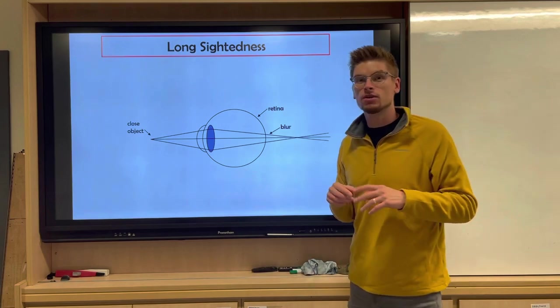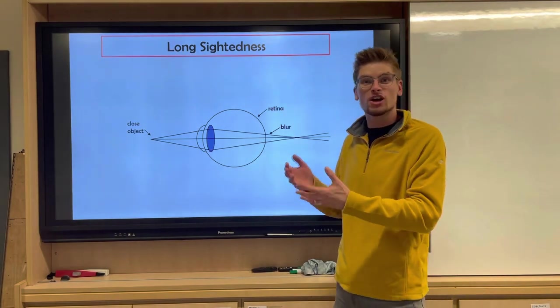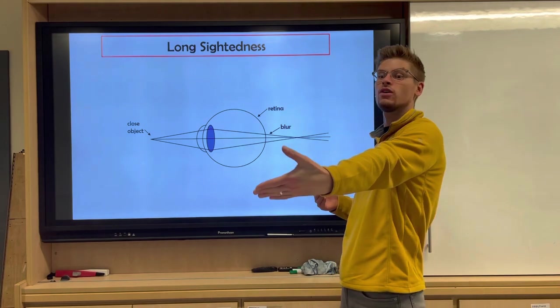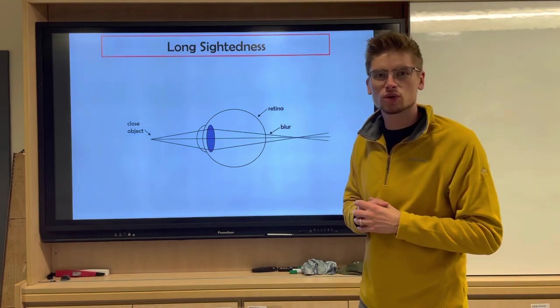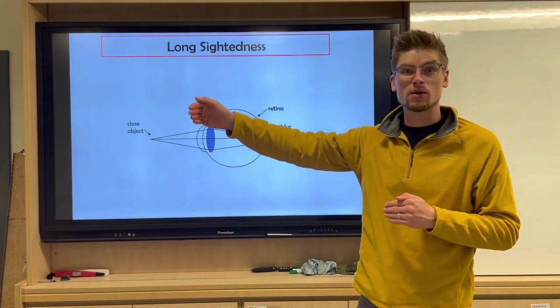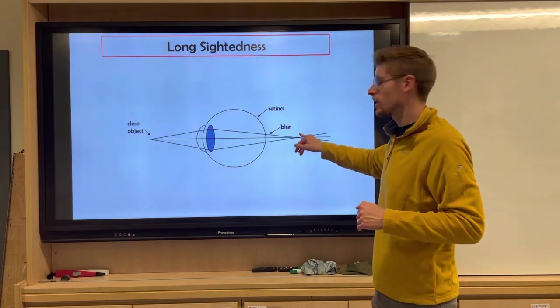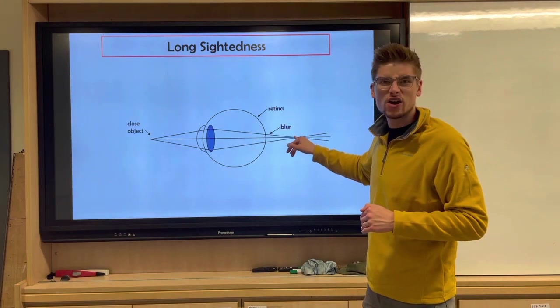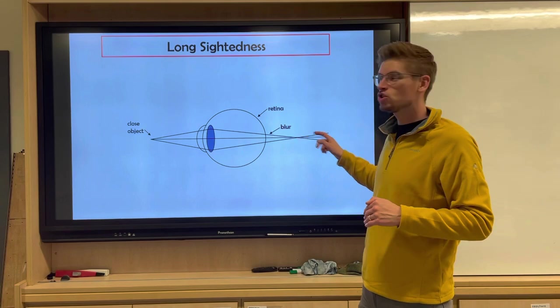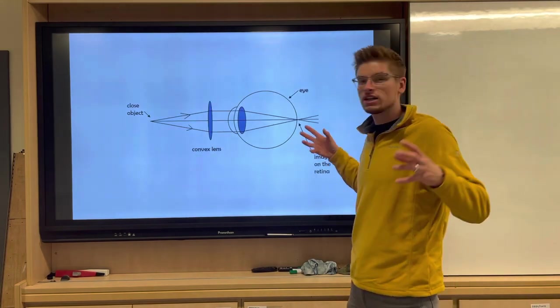What happens if it's the opposite? If someone can't see things that are close up? Your parents or grandparents might be people like this who can't read books and they have to put them far away because they can't see things that are close to them. They are long-sighted—they can only see things that are a long way away. When the light comes in, their lens just doesn't refract it enough and it focuses out of the back. We need to get a lens that corrects that and brings it in a little bit sooner.